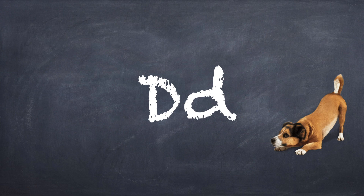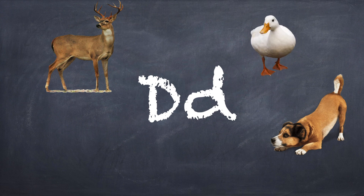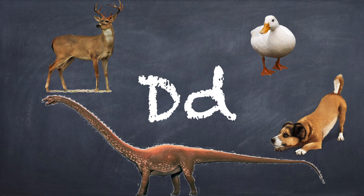Like dog — D, dog. Deer — D, deer. Duck — D, duck. Dinosaur — D, dinosaur. This dinosaur is also called a diplodocus, which also starts with a D, the D sound. What other things can you think of that start with the letter D?